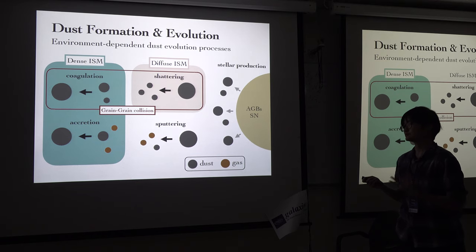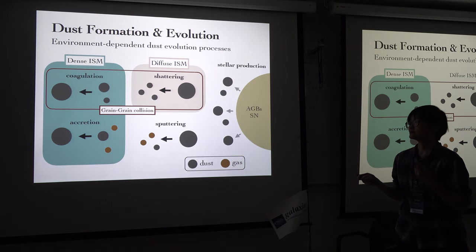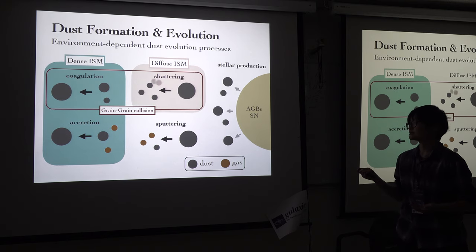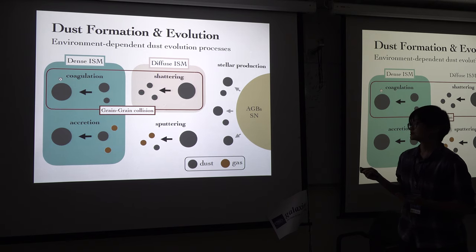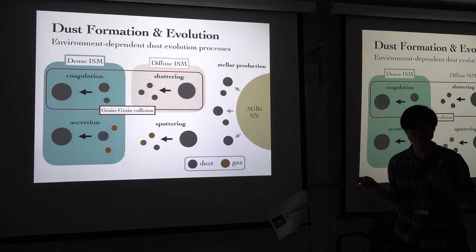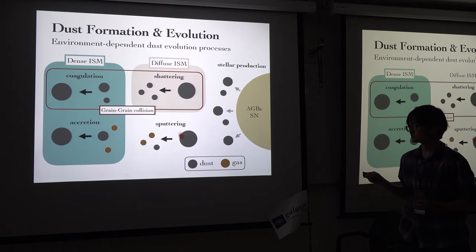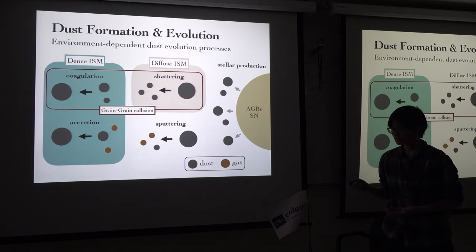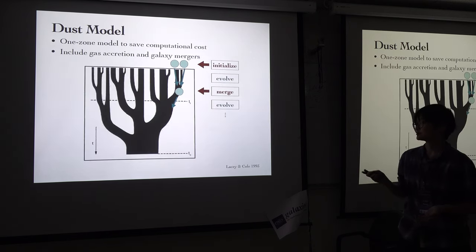I don't have time to go into detail about all these mechanisms, but I want to mention two things. One is that these mechanisms are dependent on the ISM environment — coagulation and accretion happen in a dense interstellar medium, while shattering prefers to happen in a diffuse ISM. Regarding grain size: coagulation and accretion produce large grains, while shattering and sputtering produce more small grains.